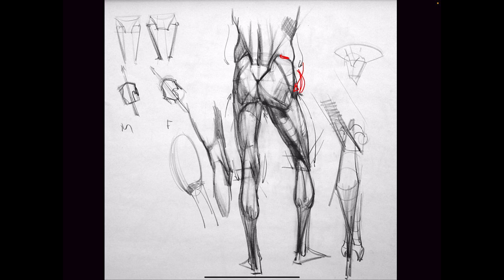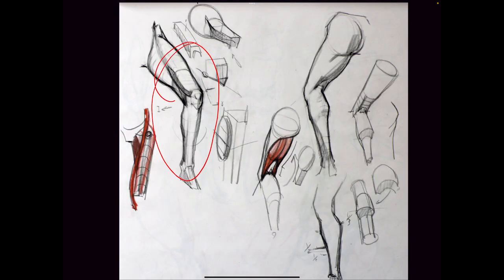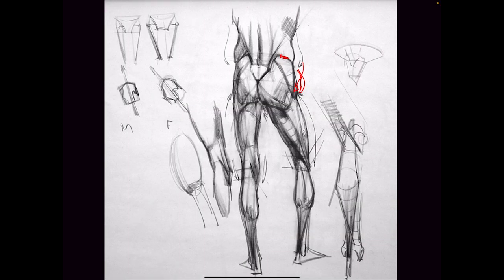Sometimes it'll stick out really dramatically. Sometimes it'll be flat — just depends on how someone's built. Don't be deceived — it's not the obliques. A lot of people think, is this your TFL? No, those are your obliques. We already talked about them. Your TFL will sit right here — you'll see it in back view as well, like a little pad.